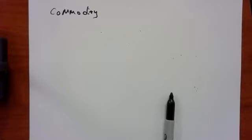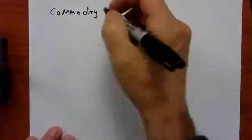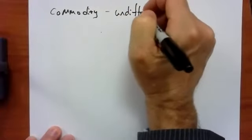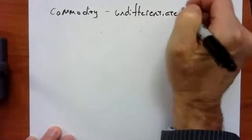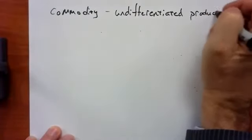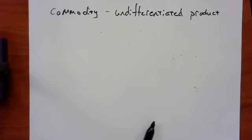A commodity is an undifferentiated product. Think of a product that is so generic you wouldn't pay extra for it regardless of who made it — whether Chloe made it or Debra made it would make no difference to you.